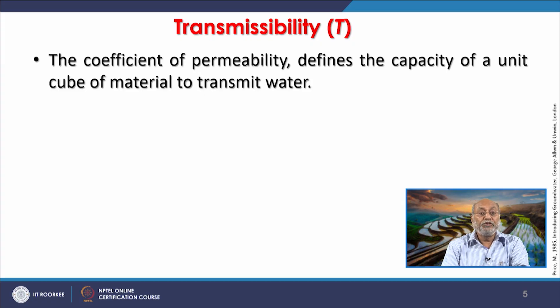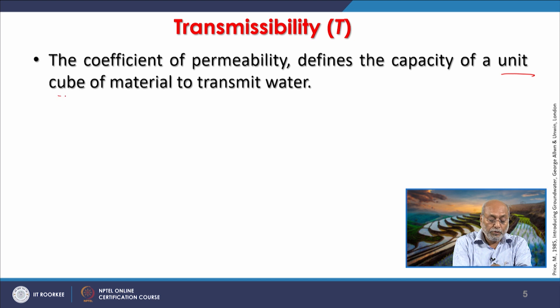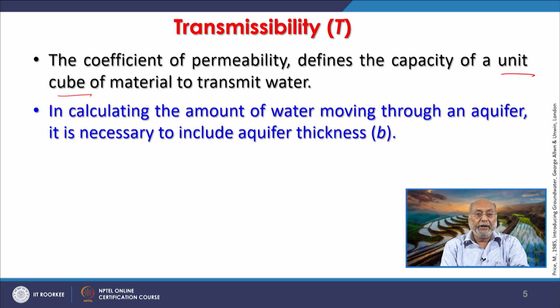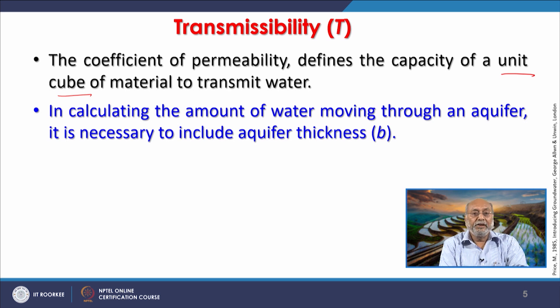The coefficient of permeability defines the capacity of a unit cube of material to transmit water, bringing us into 3D flow. When calculating the amount of water moving through an aquifer, it is necessary to include aquifer thickness. In unconfined aquifer conditions the thickness varies as pumping occurs, whereas in confined aquifer conditions the aquifer thickness remains constant — that is essentially the saturated thickness of the aquifer or rock formation.